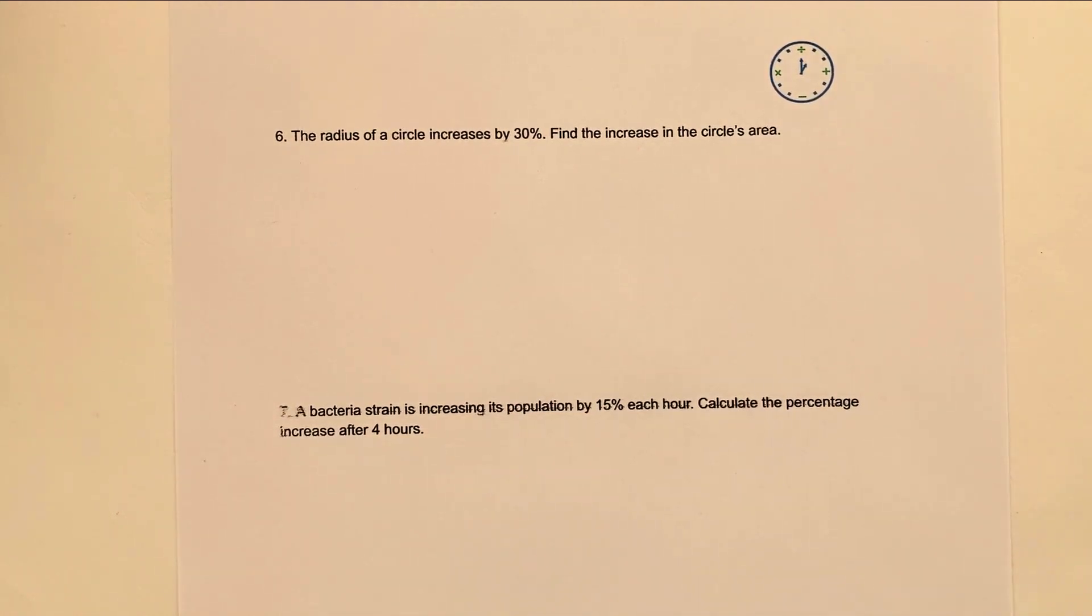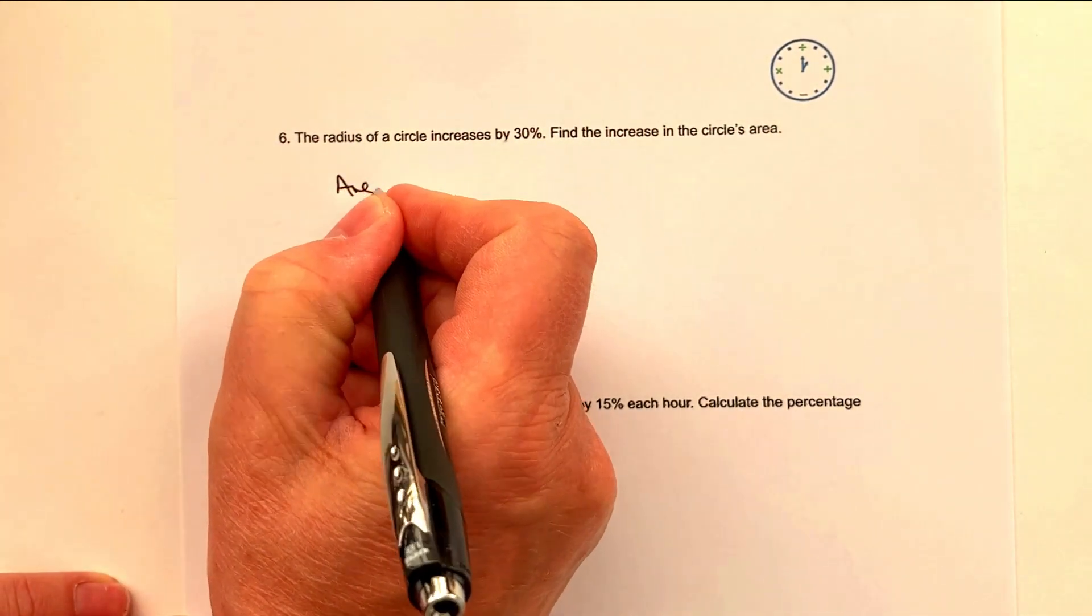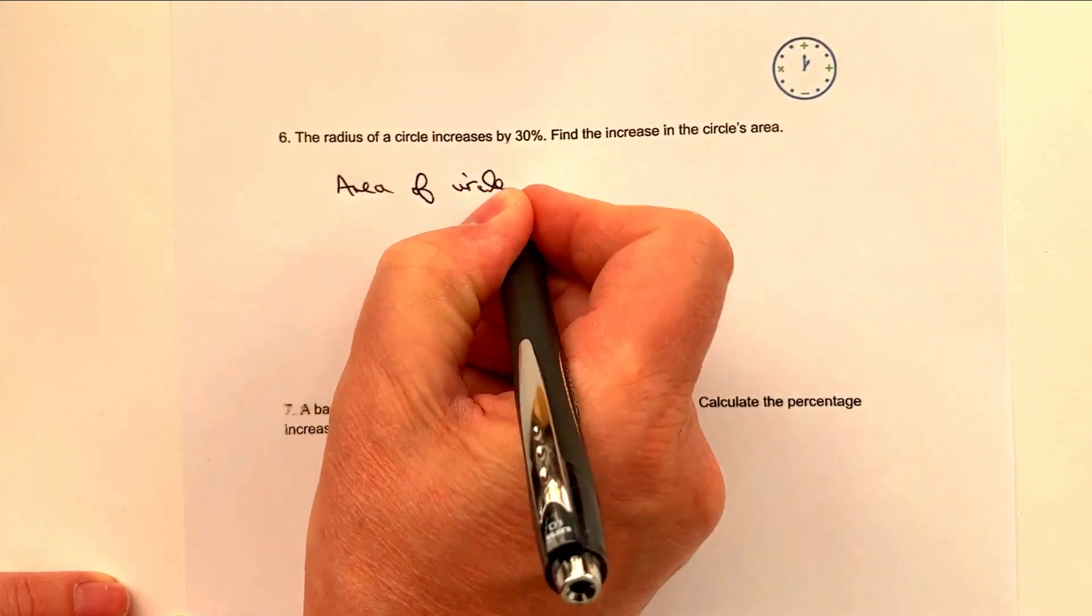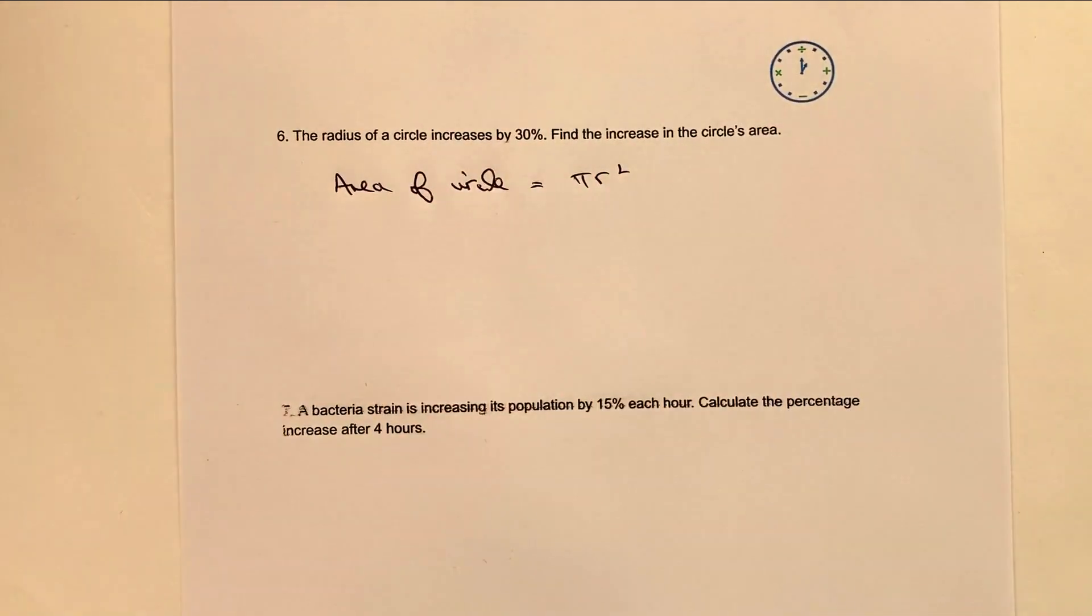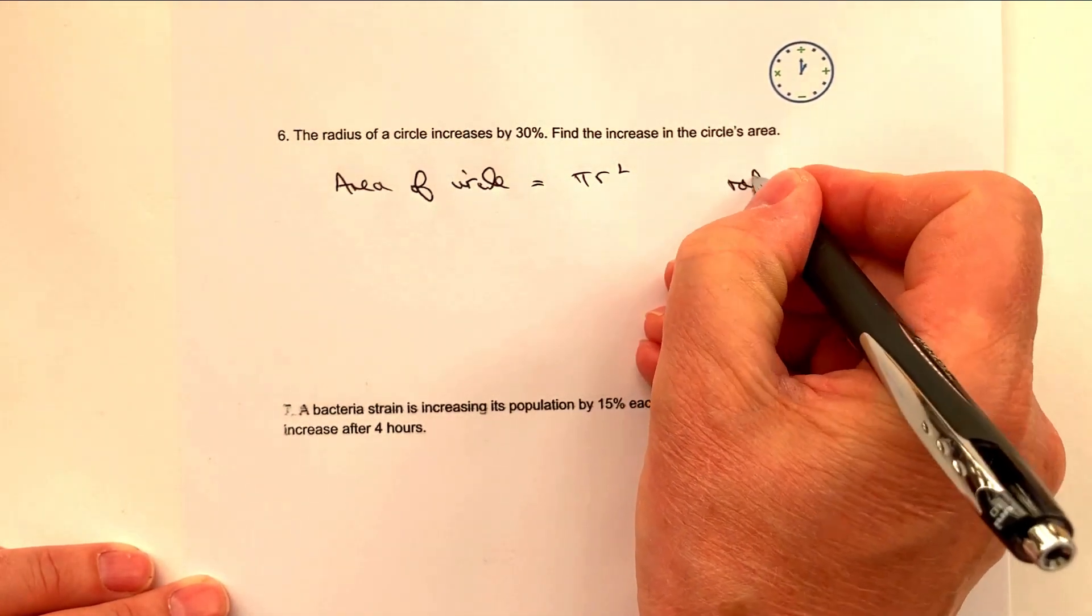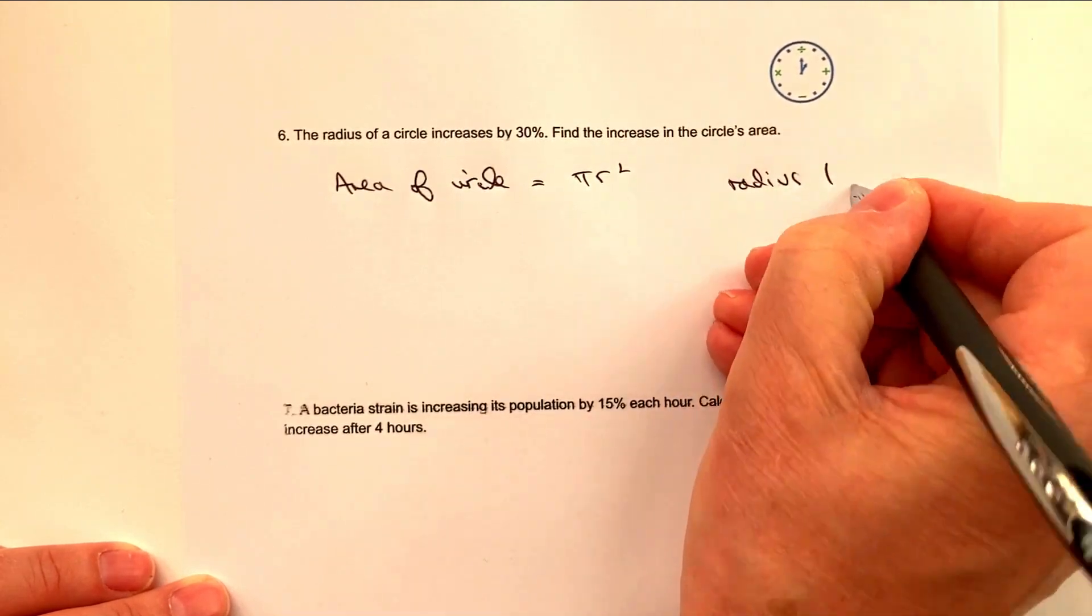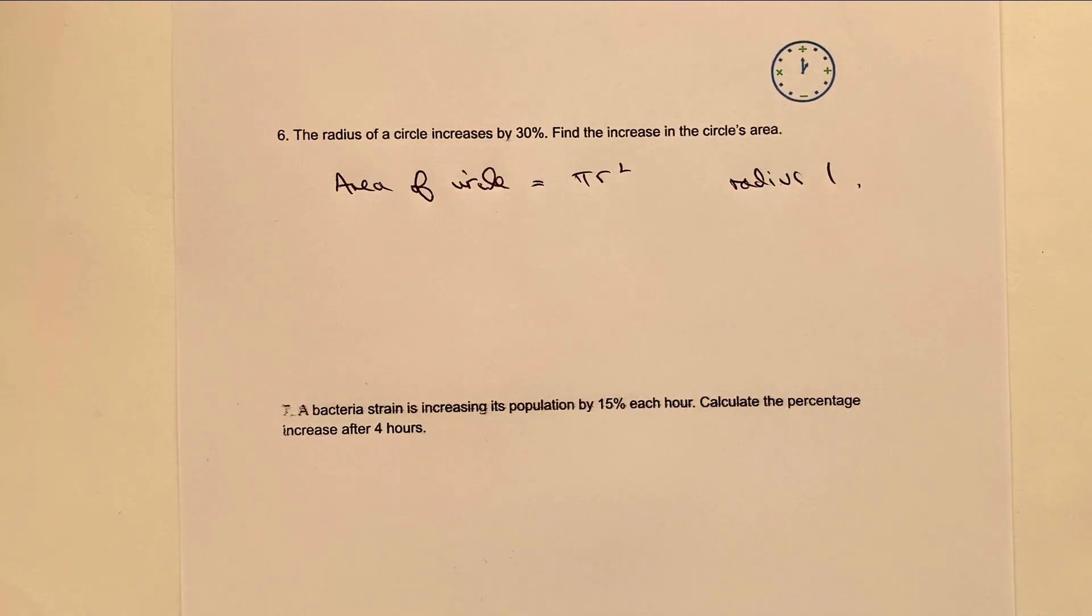On to question number six, which is a little bit more challenging. And again, as I mentioned before, you will need a calculator for some of these. Although, actually, this particular one you could do without a calculator. So please do stop the video, have a go at the question. And what we said, the radius of a circle increases by 30 percent, find the increase in the circle's area. So let's have a look at the formula for the area of a circle. So area of a circle is going to be equal to π r squared. Well, let's just for a minute assume that the radius is going to be 1. So if the radius is 1, I've basically got π times 1 times 1.